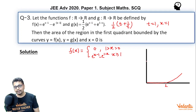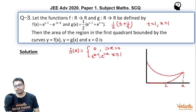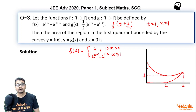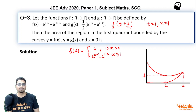So at x = 1, g(x) takes its minimum value. Then it increases and meets y = f(x) at some x = a. What is that minimum value? When t = 1, that means e^(x−1) = 1, so 1 + 1/1 = 2, times ½ is 1. So the minimum value of g(x) is 1. This means g(x) will definitely be greater than f(x) at x = 1.